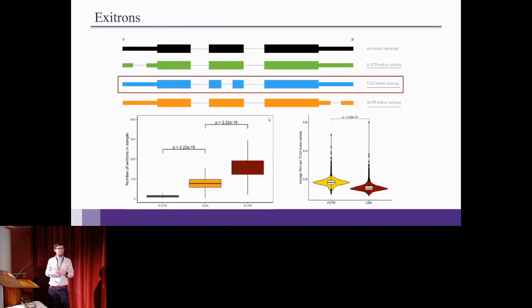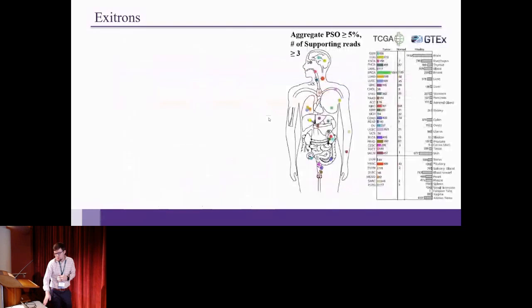And moreover, the PSO values, the percent spliced out values, are actually higher in the 3' UTR rather than the CDS regions. So not only are there more 3' UTR exotrons, but in fact, they're spliced at a higher frequency.